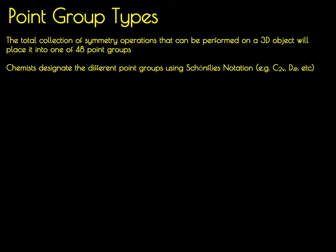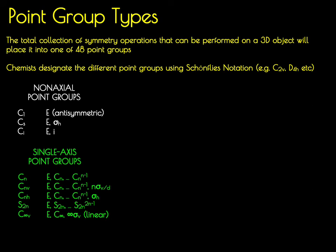Starting from lowest to highest symmetry, we have non-axial point groups which lack rotational axes — these are the C1, CS, and CI point groups that contain one or two symmetry elements. Next highest in symmetry are the single axis point groups, given the notation C with a subscript n, where n refers to the highest order rotational axis. In addition to CN, there's CNV, CNH, C∞V, and also S2N which has an improper rotational axis coinciding with the CN axis.